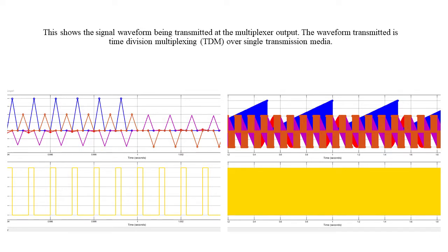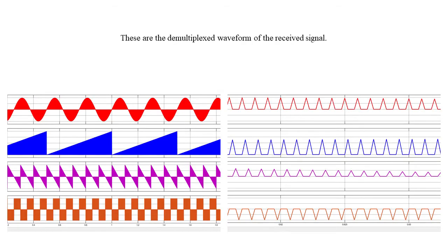After the signal passes through the multiplexer, we can see the single channel transmission line has the superposition of four different signals being transmitted to the receiver. The demultiplexed waveform looks like this after going into the receiver and being demultiplexed into their respective channels.